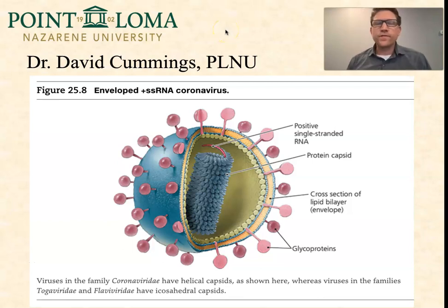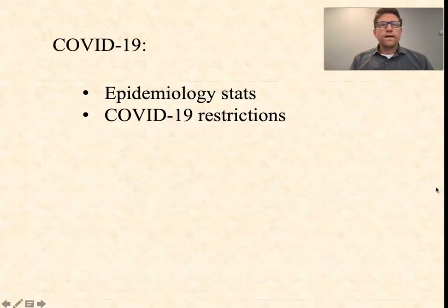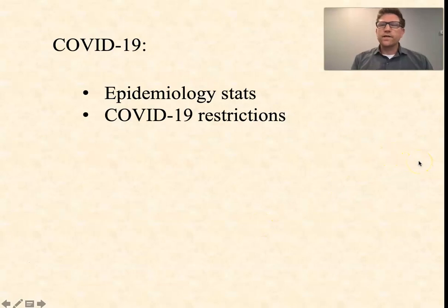Hey folks, I'm Dave Cummings from Point Loma Nazarene University. I'm a microbiology professor and this is the third video in a series on coronaviruses. The first covered the basic biology of coronaviruses in general. The second was focused more on the SARS-CoV-2 virus which causes COVID-19. In this one I want to talk about the epidemiology, the statistics, what we see as far as how it has spread over the last several months around the world, and then some of the restrictions that different municipalities have put into place regarding COVID, everything from masks to social distancing.